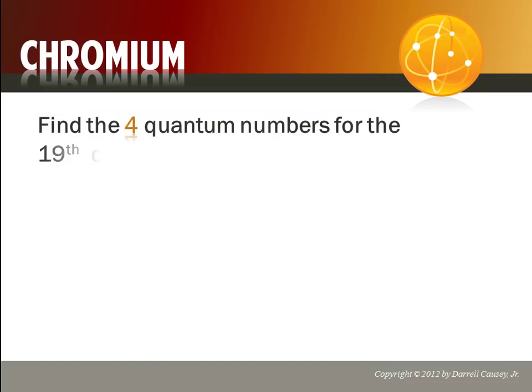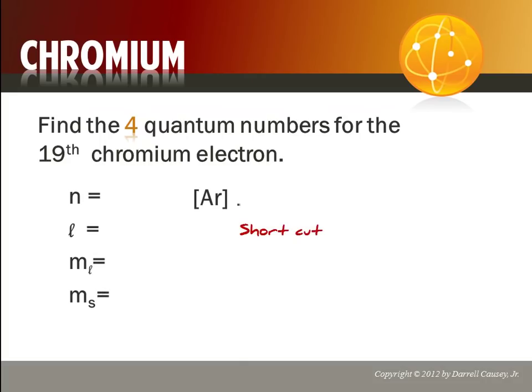Let's look at chromium. It has 24 electrons. And let's look at the 19th chromium electron. Now, notice I used a shortcut here because I don't think I'd have enough room. So, argon has 18 electrons.